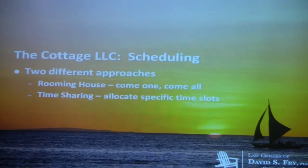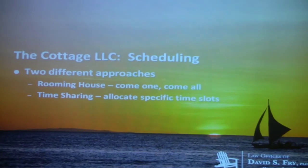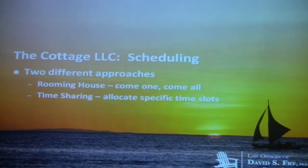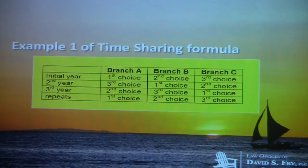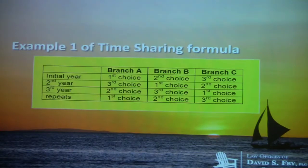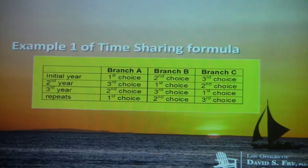You allocate specific time slots to individual members of the family and then rotate that sequence of selection, so that whoever chose first last year chooses last this year. By rotating in a specified sequence, every member of the family gets first choice at some point. For example, with three branches — Andy, Bob, and Carol — Andy had first choice last year, so he gets third choice this year, and you go through a regular rotation.